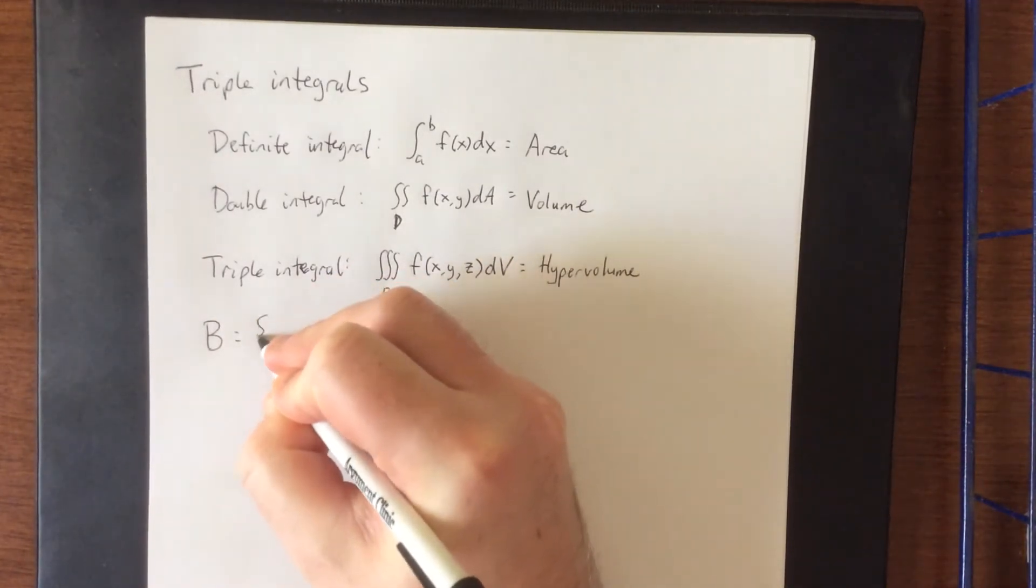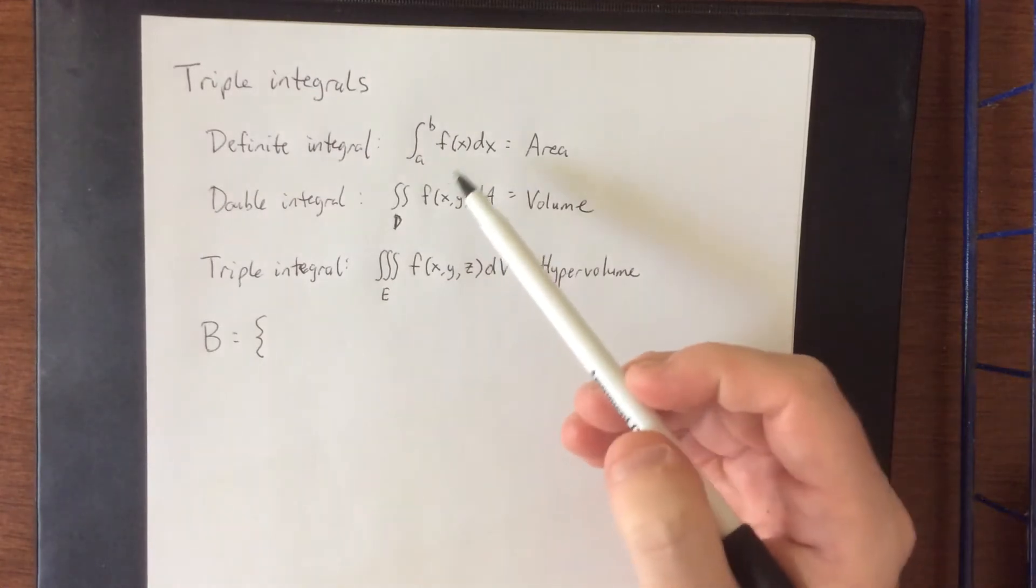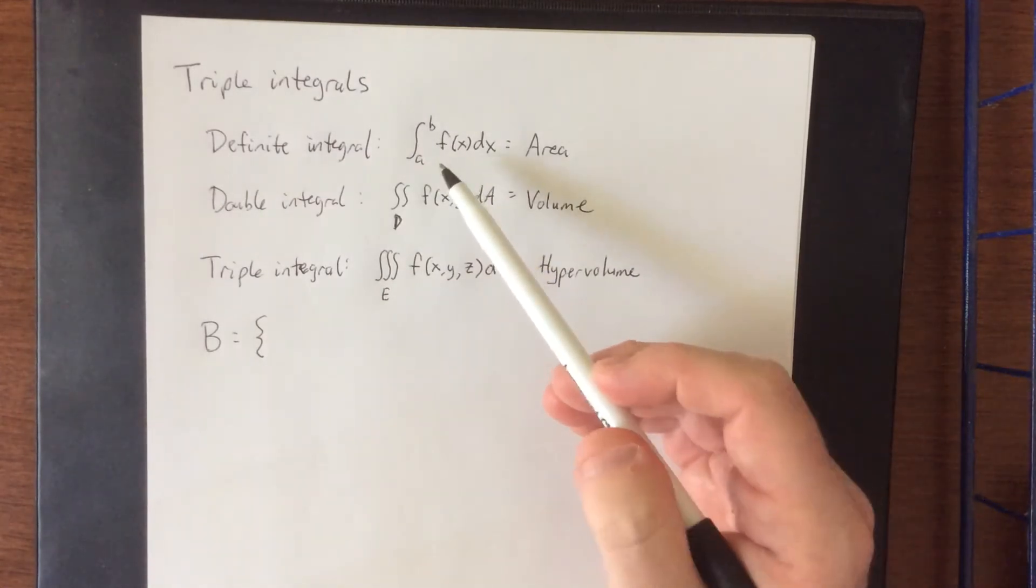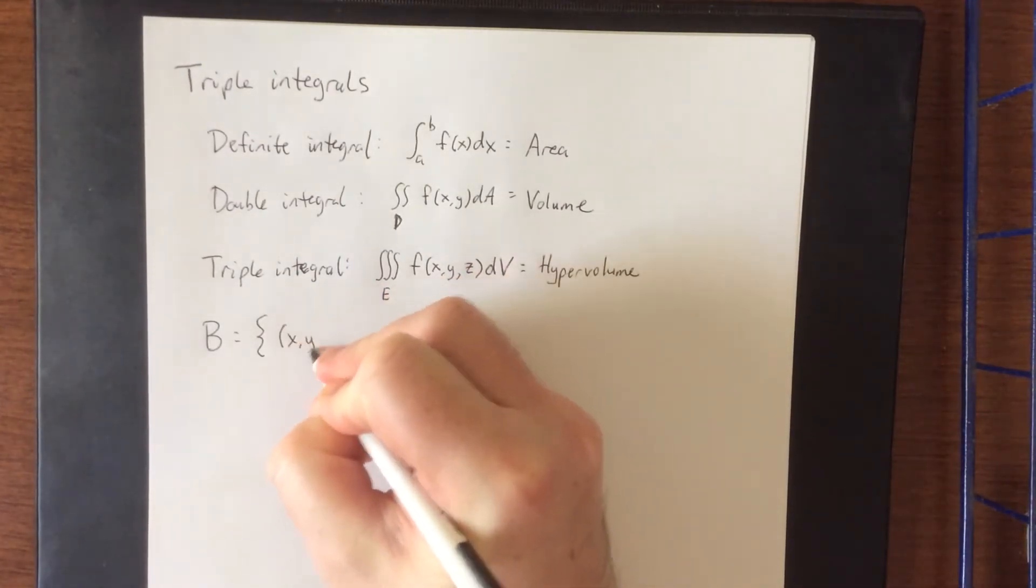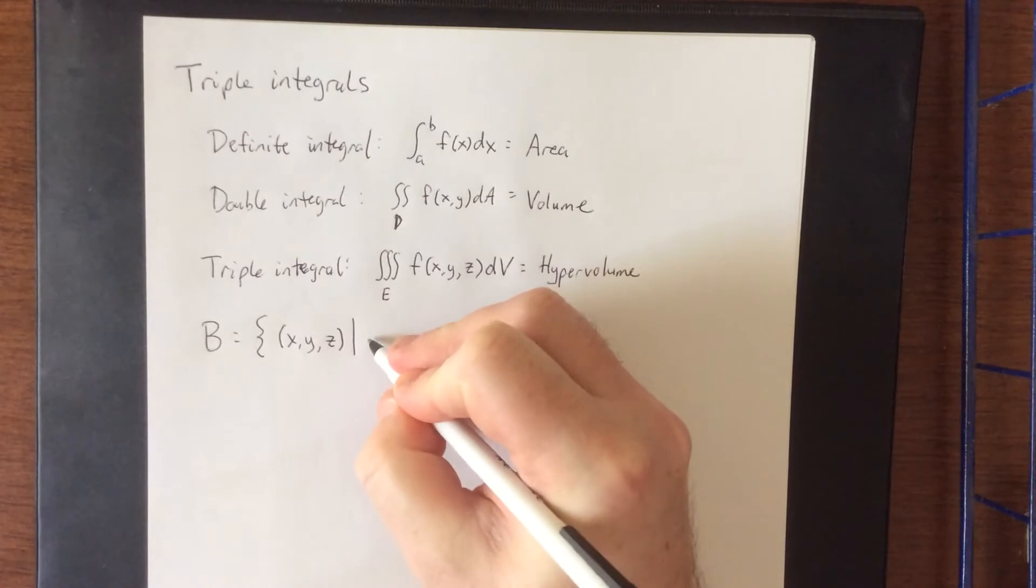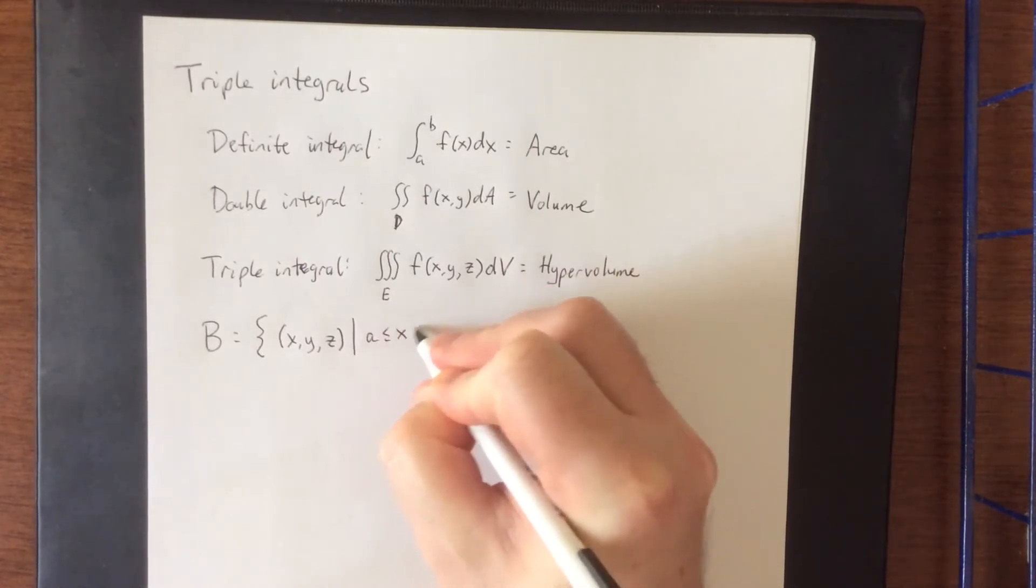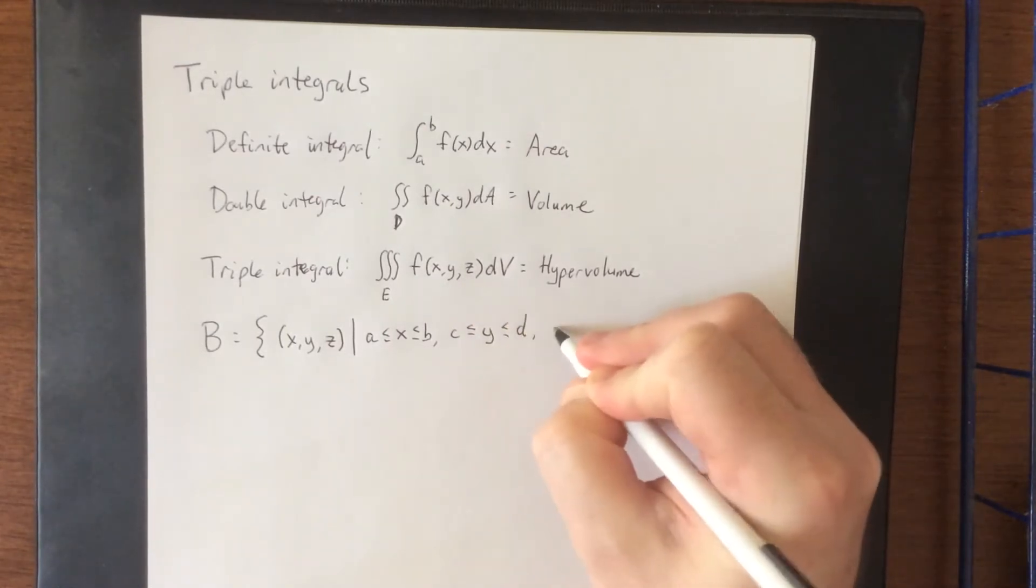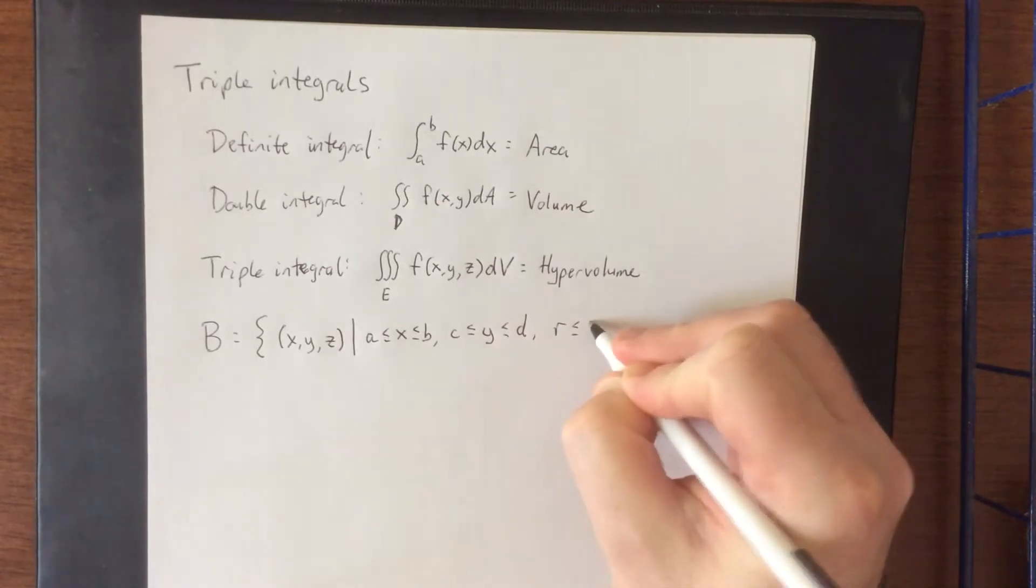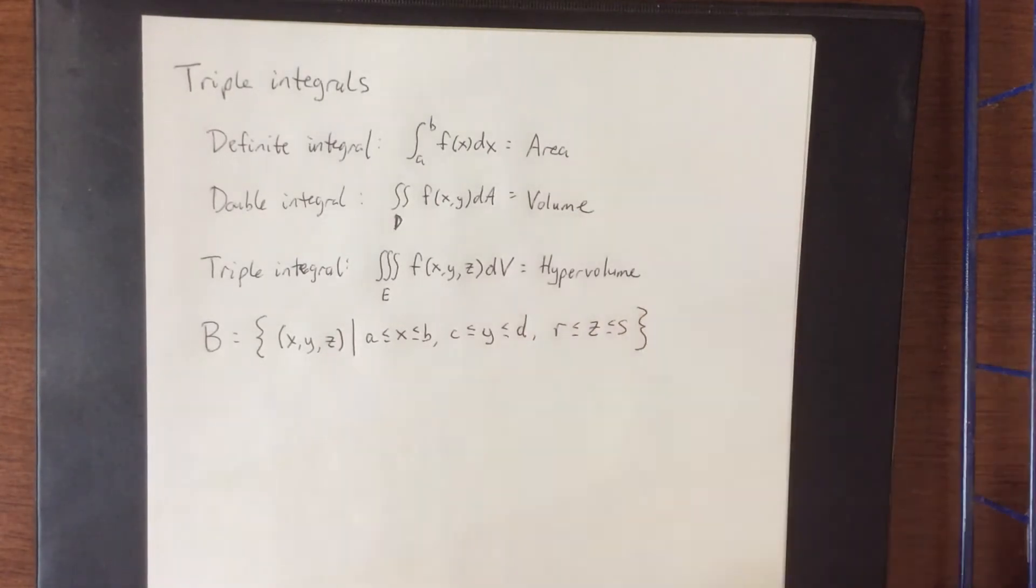First thing we're going to do is define a box. A box is going to be what you get when you take three closed intervals, one for each of our variables x, y, and z, and put them all together. So this will be the set of all ordered triples (x, y, z) such that x is between a and b, y is between c and d, and we're going to be running very low on letters during this, so we're going to say that z is between r and s. The reason that we don't say e and f is because those are going to have different meanings later on.